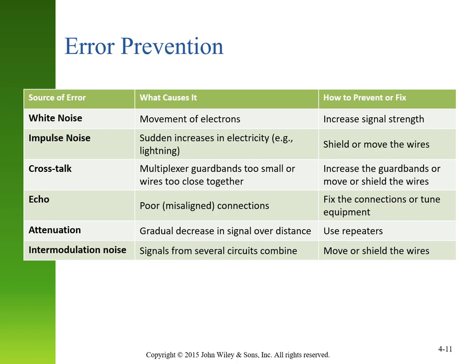Many sources of error can be improved by simple technological adjustments. If you're getting a lot of white noise — extraneous information — increasing signal strength can help, like speaking more loudly in a noisy room. For impulse noise, such as sudden bursts of electricity like lightning, shielding or moving your wires might help — similar to moving a conversation from a loud room to a quieter outdoor area to remove the interference.